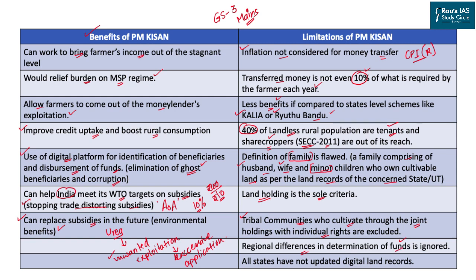Seventh, there are regional differences in funds allocated — agriculture is more critical in states like Bihar where wage rates are low and people are poor, requiring more support than relatively prosperous Punjab farmers who benefited from the Green Revolution. The scheme should account for this fund differentiation. Eighth, all states have not updated their digital land records, meaning no complete identification of farmers can be made to receive funds under the scheme.